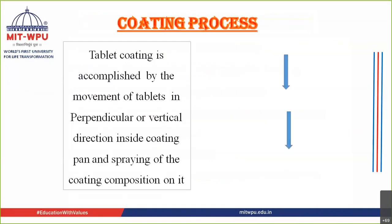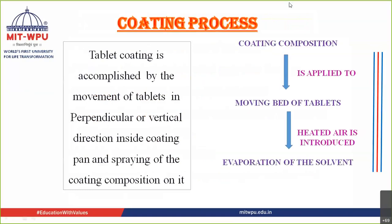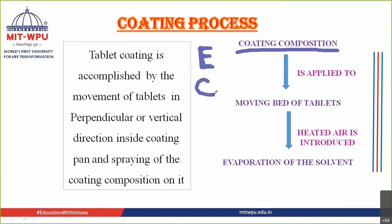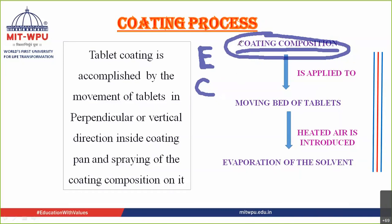Now, how does the coating process work? First, we prepare a coating composition. This composition is made up of a number of ingredients — excipients of the coating formulation. The coating composition consists of color, a polymeric material, a solvent system, a plasticizer, and in many cases sugar as well, as in sugar coating.